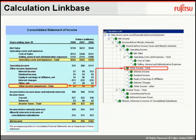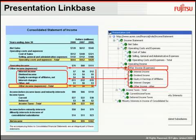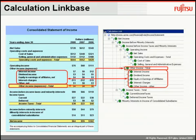Another link base is the calculation link base. This is designed to allow us to show calculations — what the totals and subtotals should be. In this example, you can see that Other Income Total is the sum of interest income, dividend income, equity in earnings of affiliates, etc. Looking back on the left-hand side, we can see that this mirrors the structure of the calculations on that side.